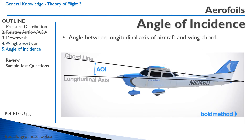The angle of incidence is the angle between the longitudinal axis of the aircraft and the wing cord. This image is from Bold Method — you can check out their YouTube channel and their website, as they have a lot of good information on flight training. You can see here the angle of incidence between the longitudinal axis and the cord.